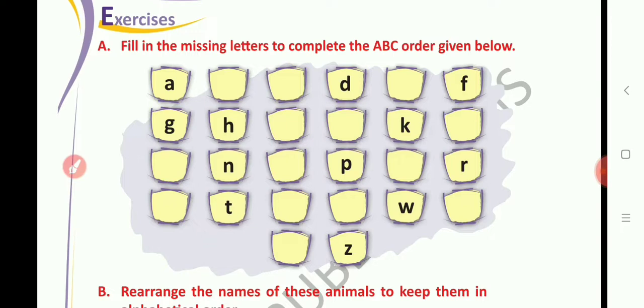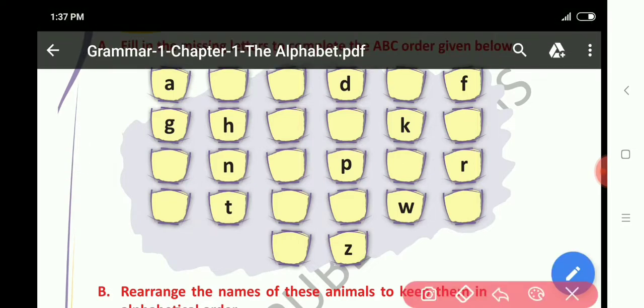So, children see here A is already written and after A what should write down? Yes, B then C. D is already written children here. So, after D we have to write down E, F, G and H already written here. After H, I am writing here I. Then J.